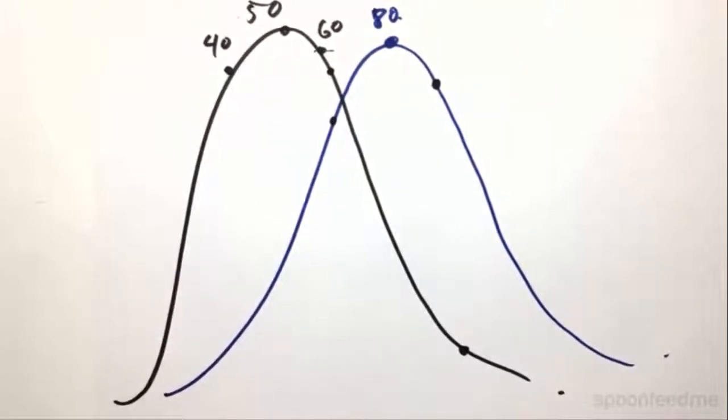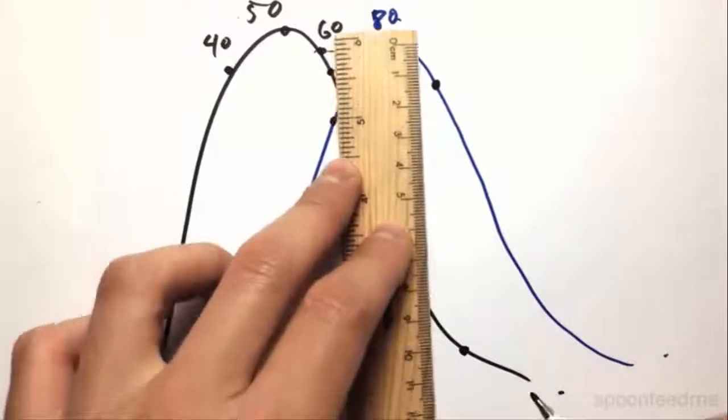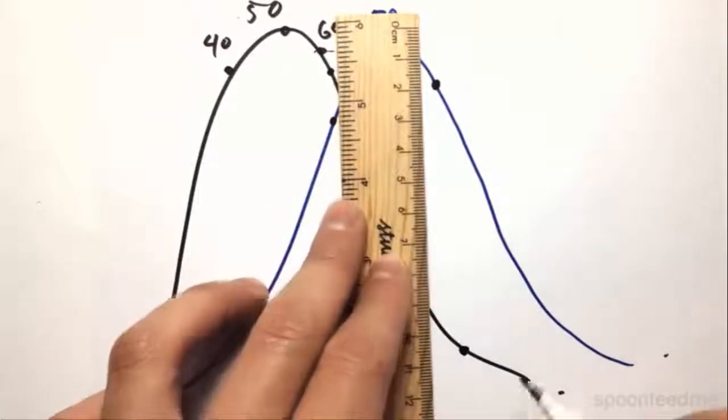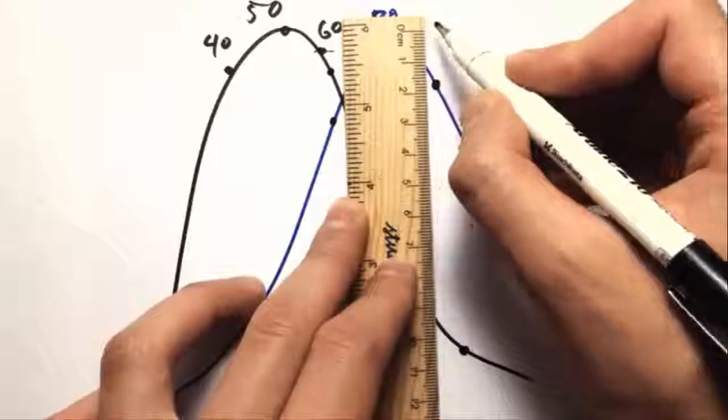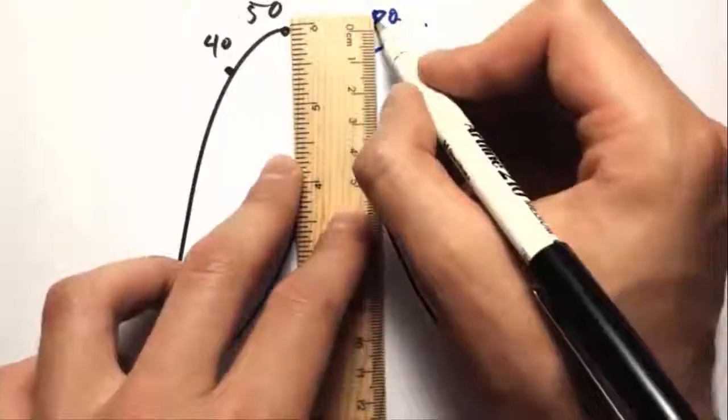That is the question we have to ask ourselves. And what we have in psychology is this p-value cutoff. And that's 0.05. So that would be maybe somewhere like, for our purposes, it could be something like there.